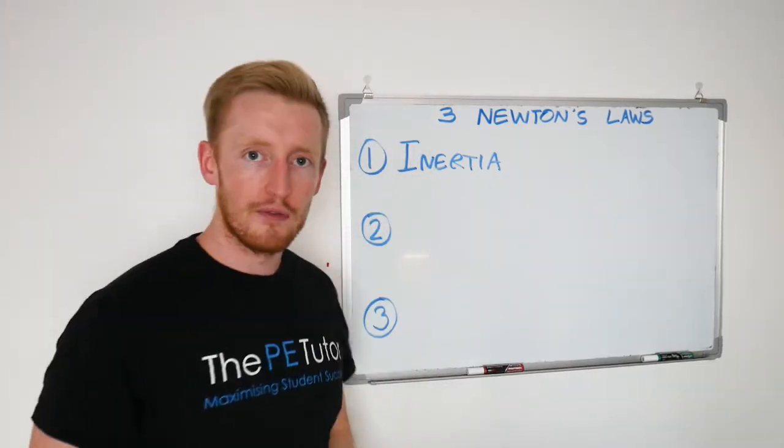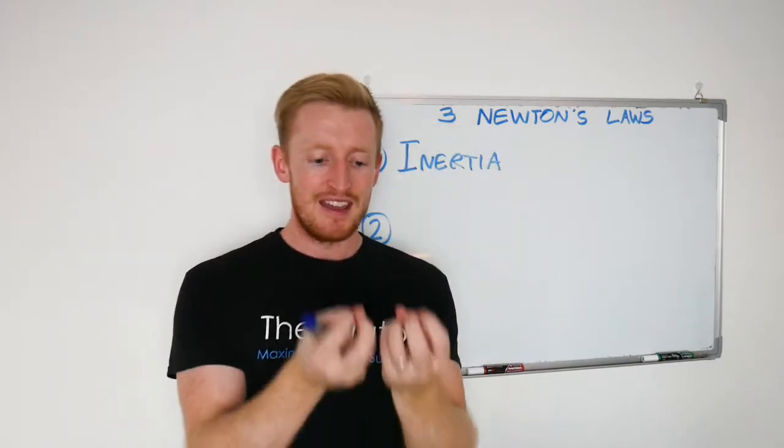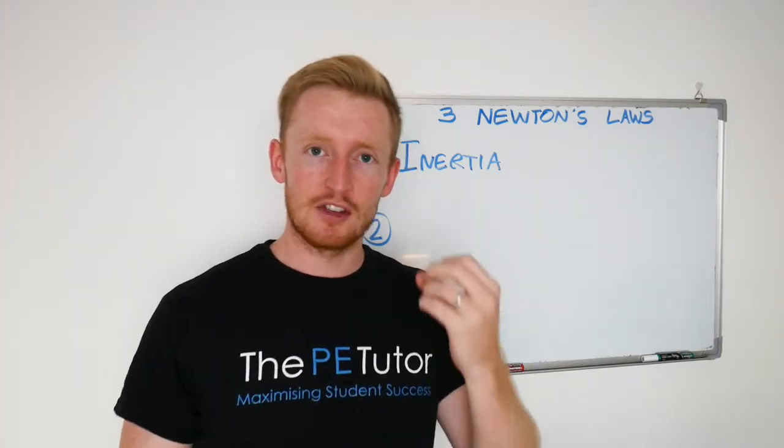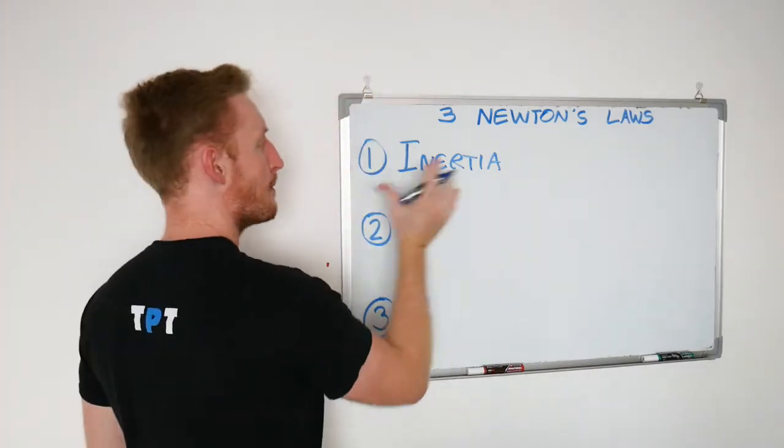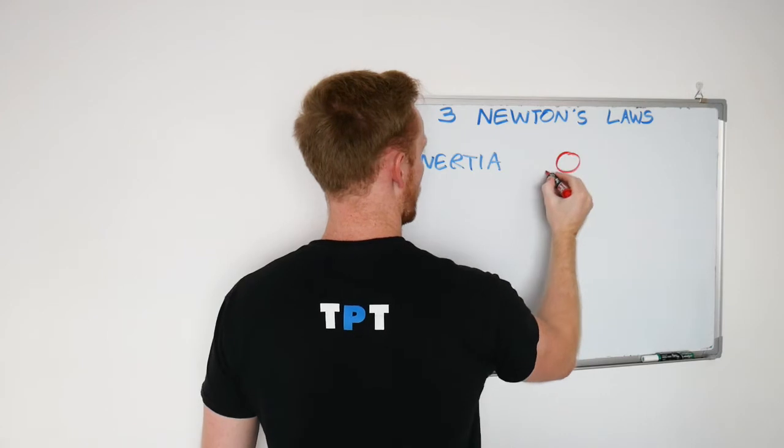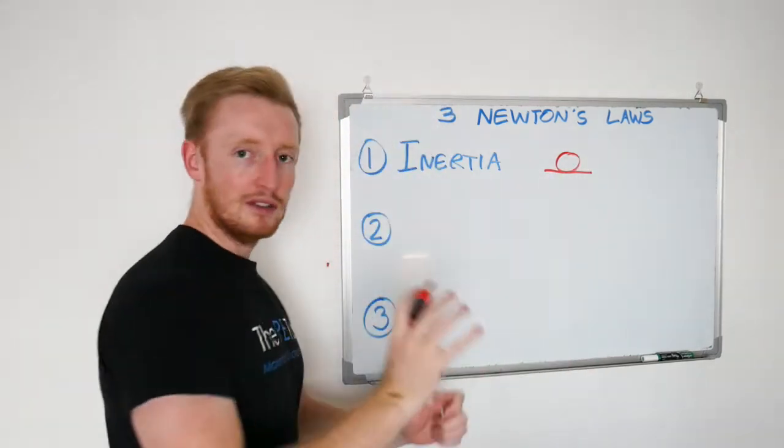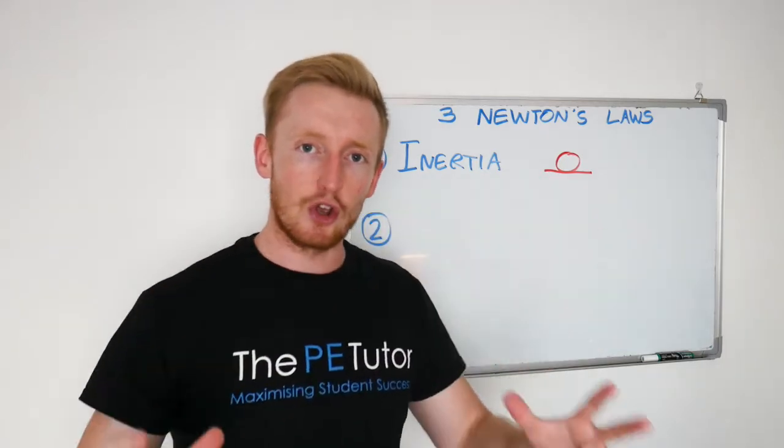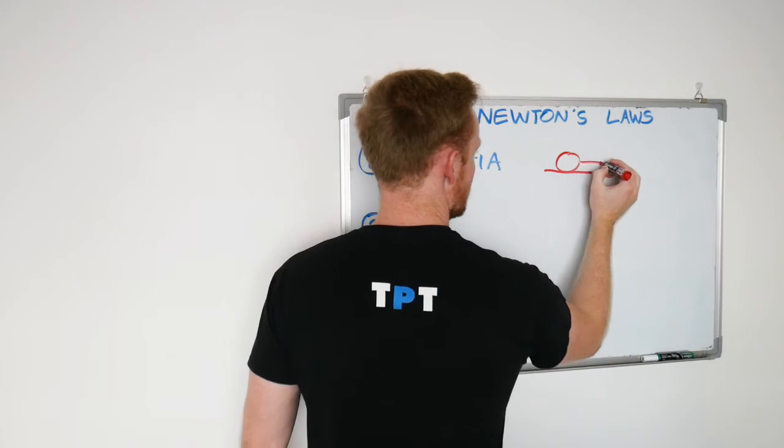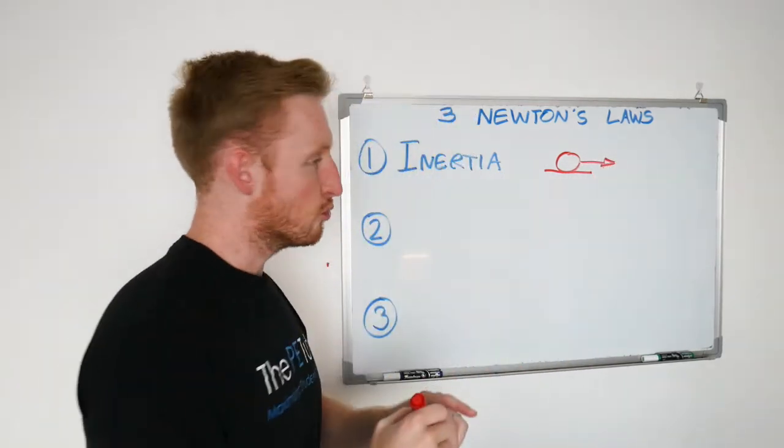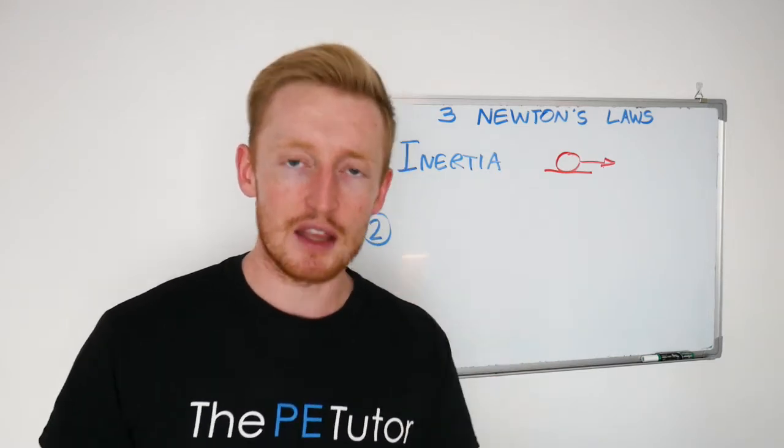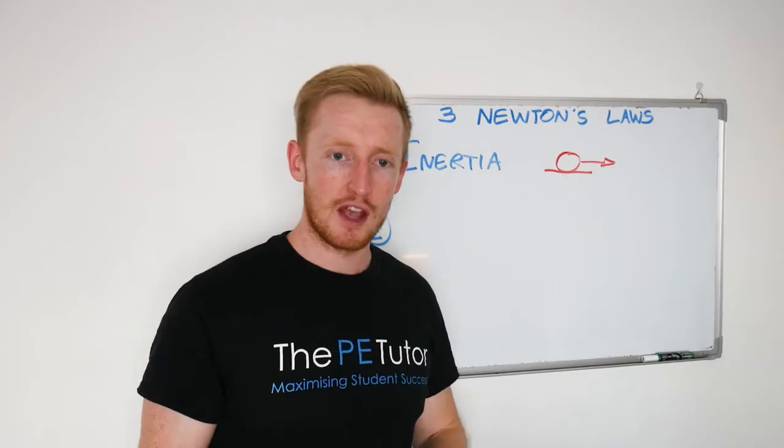So we'll start off with the law of inertia, and this relates to the unwillingness of an object or a body to change. And we can have a body or an object that is stationary. So let's just say we have a ball on a surface. That ball will not move unless an external force acts upon it. If that ball was in motion, then the rate and the magnitude and the direction of that motion will remain unchanged unless an external force acts upon it.